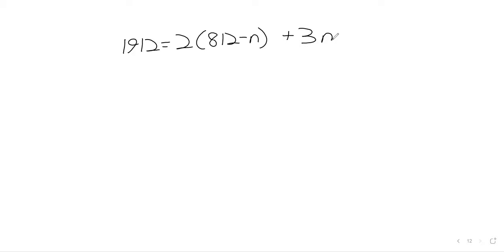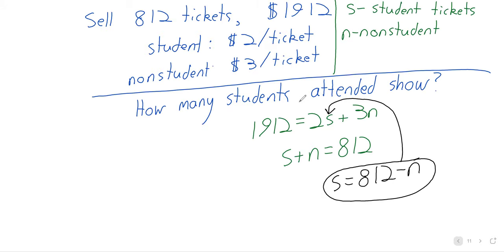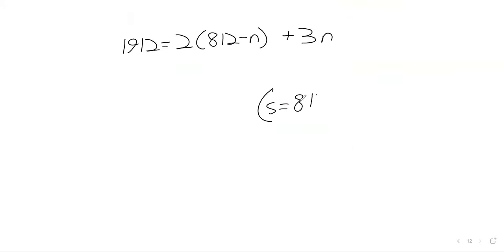What we can do is solve for one variable in terms of the other and then plug it into the equation. It would have been more convenient to write n equals 812 minus s, but: 1912 equals 2 times (812 minus n) plus 3n. We now have an equation of one variable — s has gone away and we just have n. Once we figure out n, we'll be able to figure out s. We'll finish this properly next time.